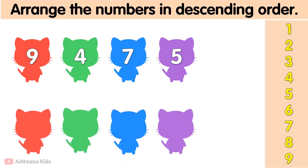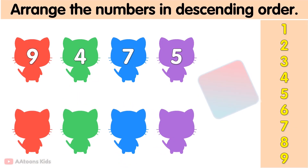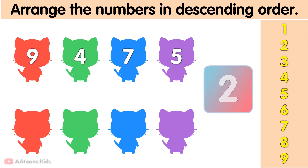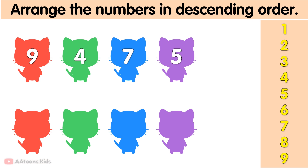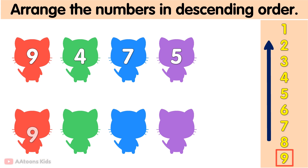Arrange the following numbers in descending order. To arrange the numbers in descending order, we start with the largest number and move toward the smallest number. So firstly, we need to find the largest number among 9, 4, 7, 5. 9 is the largest number, after that 7, 5, and 4.